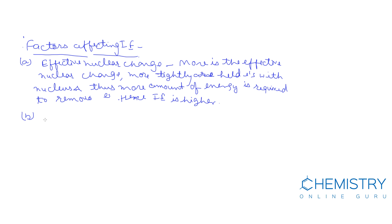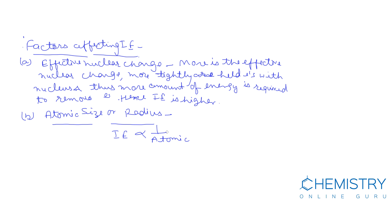The second factor is atomic size or atomic radius. Ionization energy is inversely proportional to atomic radius. In a period, atomic radius decreases, so ionization energy increases.